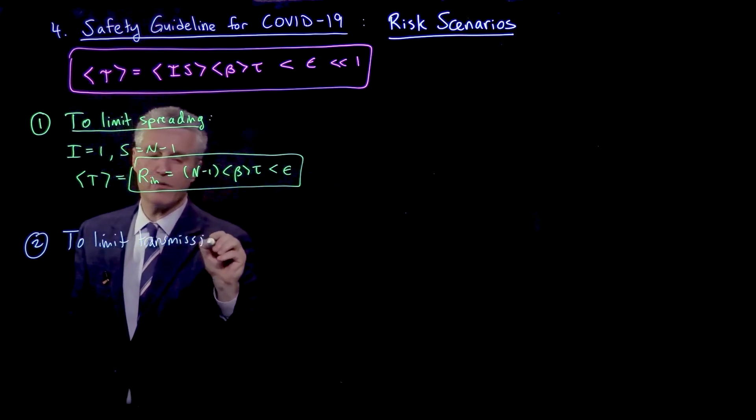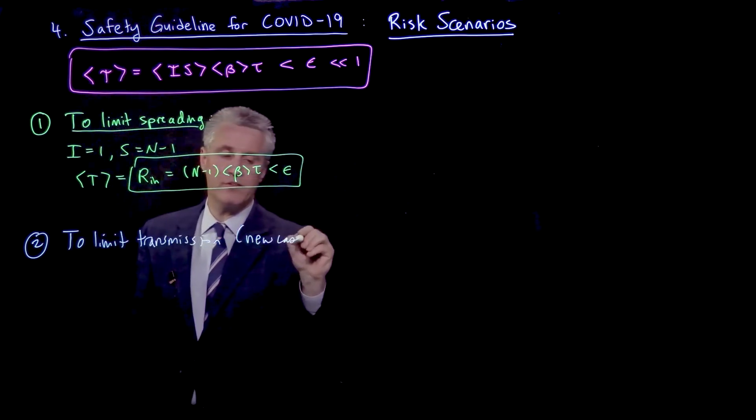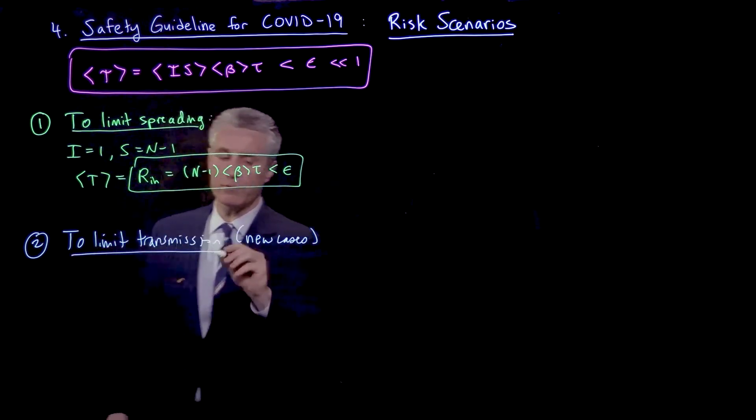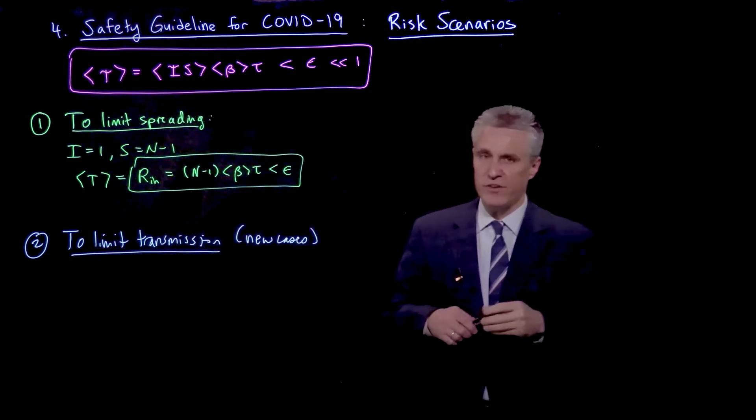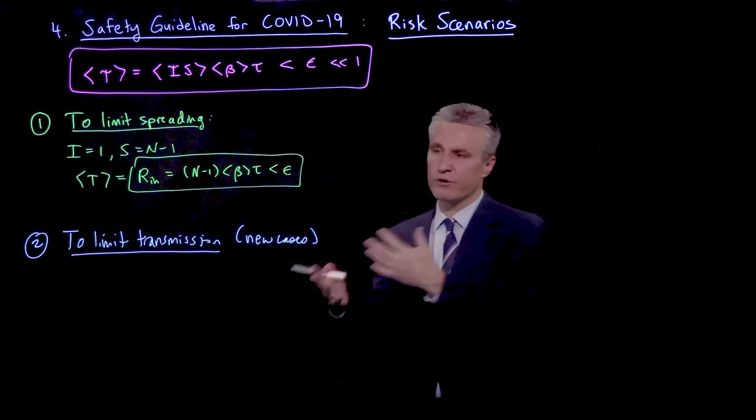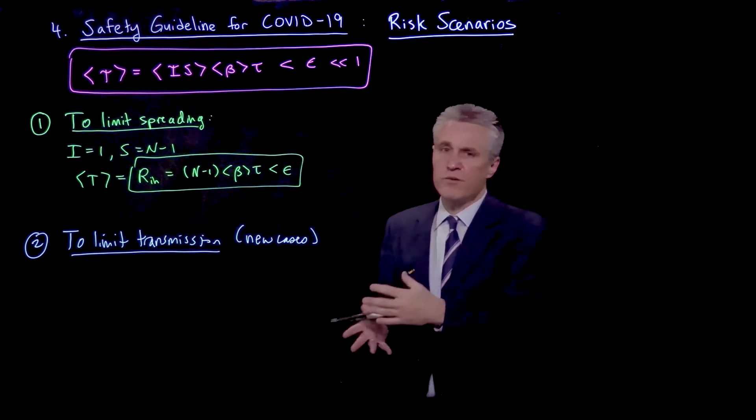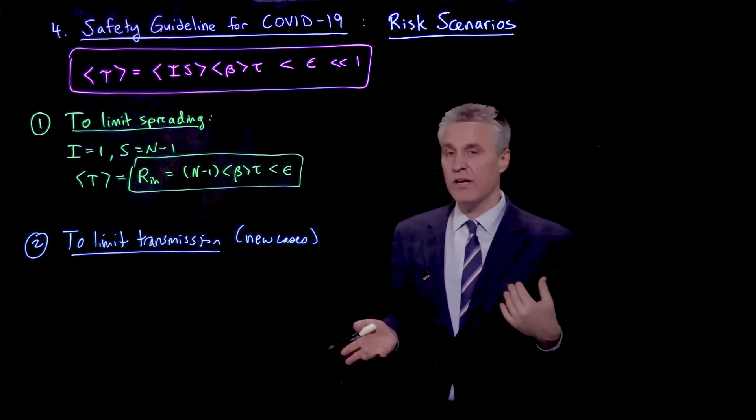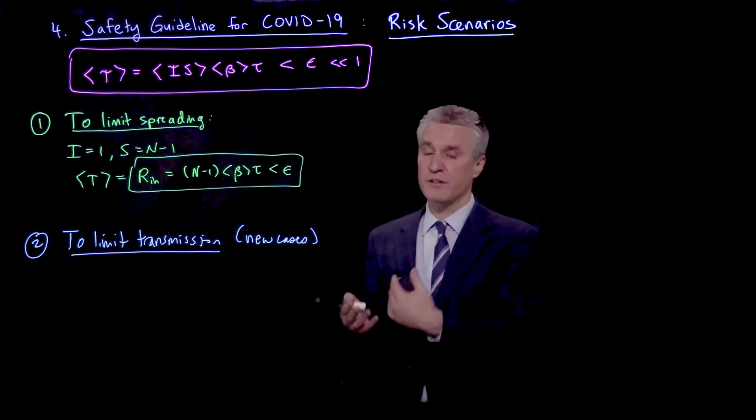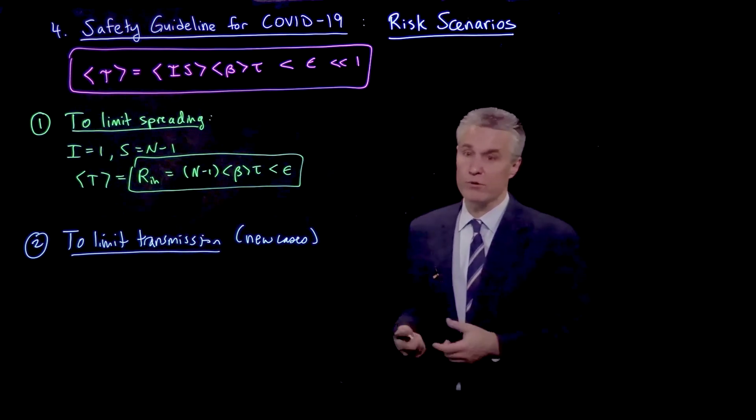Which is to limit transmission, or maybe another way of saying that more precisely is new cases that are going to arise in this indoor space. So now we're not just saying if an infected person enters, we don't want any new cases. What if we just don't want new cases at all, including taking into account the low probability that somebody actually does enter this room who is infected?